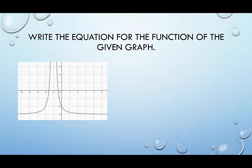In our first example, the pieces of the graph are going in the same direction, which indicates we're looking at the reciprocal of 1 over x squared. So we're looking at g of x equals a over x minus h, quantity squared, plus k. The vertical asymptote appears to be at x equals negative 1 and the horizontal asymptote is at y equals negative 3. While the graph looks like it's hitting negative 3, it's probably just ever so slightly above it — because we're squaring things it reaches its goal quicker, but it's never actually going to reach it.